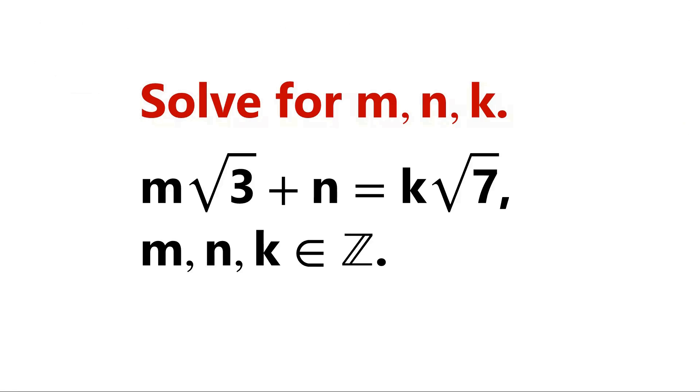Solve this Diophantine equation: m√3 + n = k√7, where m, n, and k are integers.